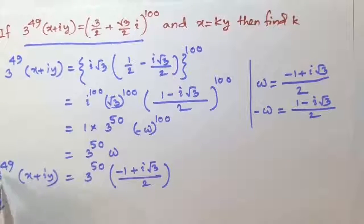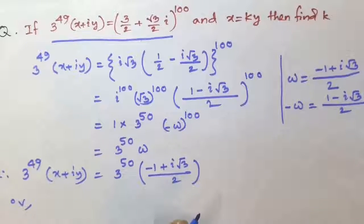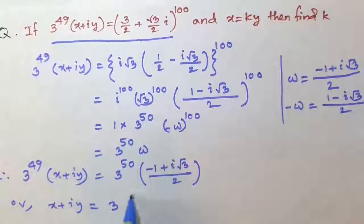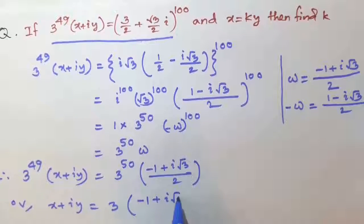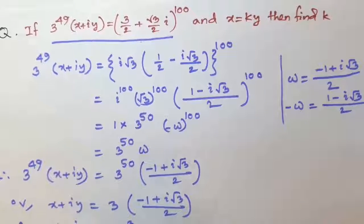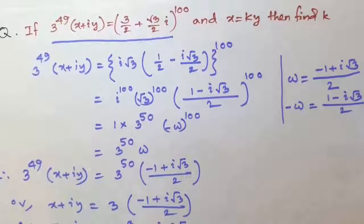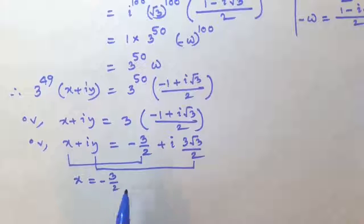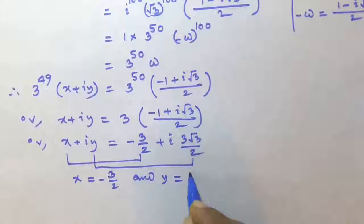From both sides, 3 to the power 49 is cancelled. So, x plus iy is equal to 3 times of minus 1 plus i root 3, whole divided by 2. Or, x plus iy is equal to minus 3 by 2 plus i into 3 root 3 divided by 2. So, comparing both sides, we get x is equal to minus 3 by 2 and y is equal to 3 root 3 divided by 2.